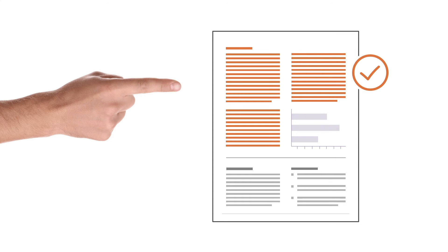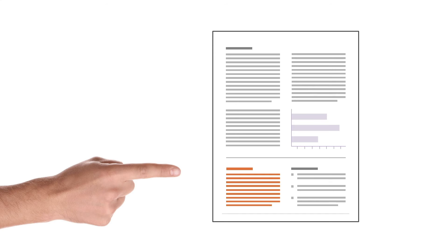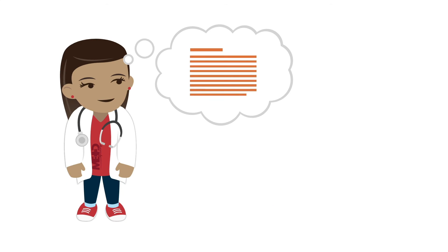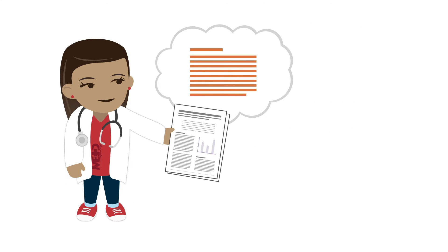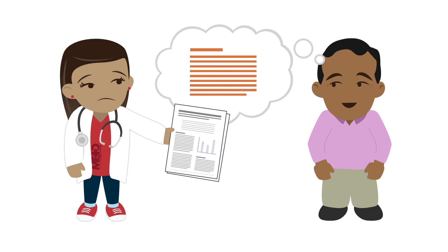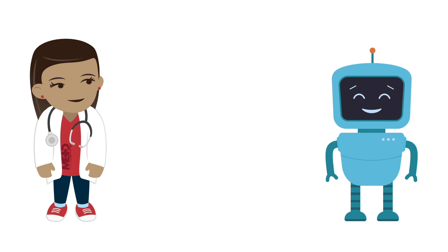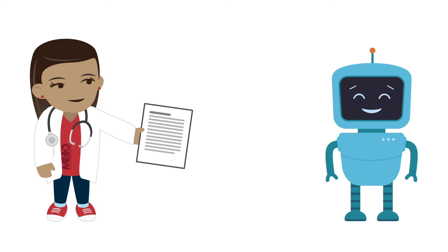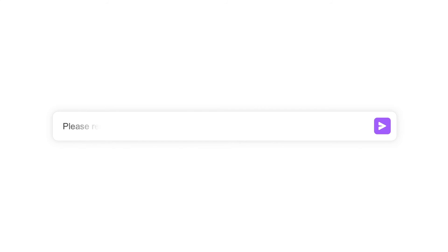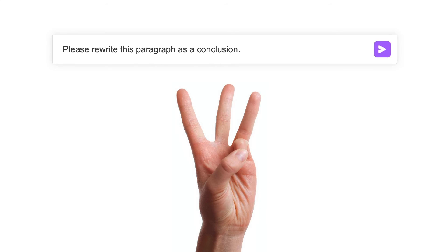Having covered counterarguments, we're now approaching the final stretch of our academic writing journey with ChatGPT. We need to round off our work with a compelling conclusion. Writing a conclusion that effectively summarizes your work and leaves a lasting impact on the reader can be challenging, but with ChatGPT this task becomes significantly more manageable. Similarly to how we crafted our introduction, you should start by writing a draft of your conclusion. Once you have this, run it through ChatGPT with the prompt: "Please rewrite this paragraph as a conclusion." You should ask for three variations to have a wide range of choices.